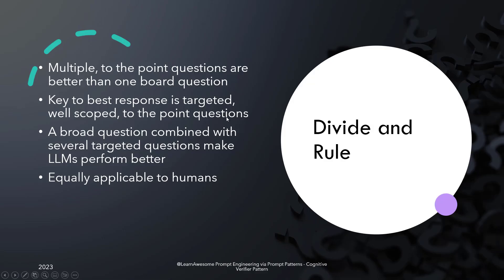There is research suggesting that large language models are able to reason much better if a question from the user is subdivided into additional questions that provide answers combined into the overall answer to the original question. Unless the question is very precise, to the point, and really well scoped, there are hidden dimensions and assumptions involved in answering it. This is true for humans and models alike.